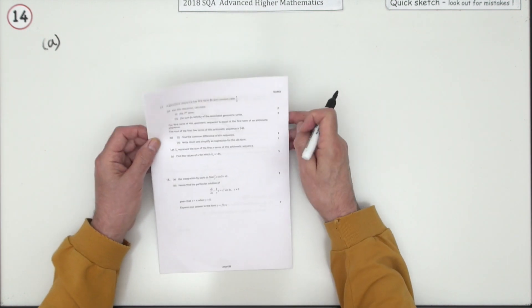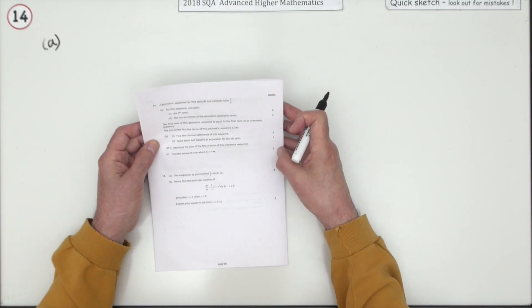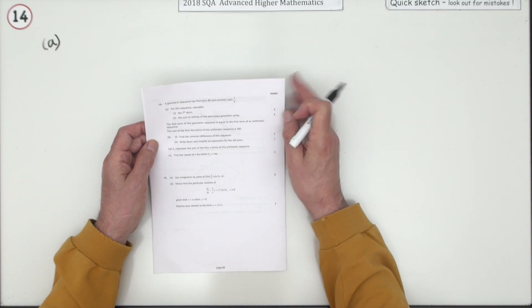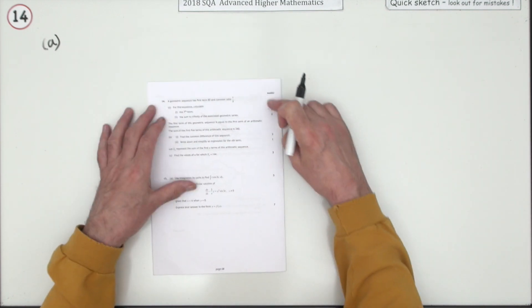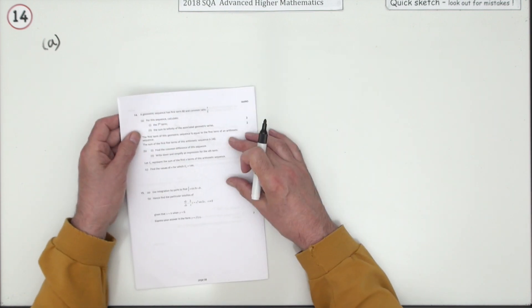Number 49 from the 2018 Advanced Higher Maths, 10 marks. The first of the 10 mark questions, sequences. It's broken down to all these bits and pieces though, this is a fairly straightforward question.